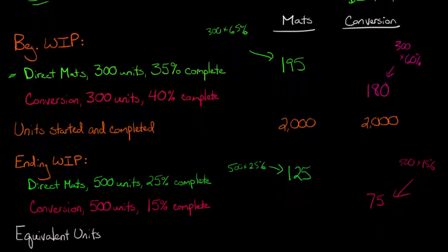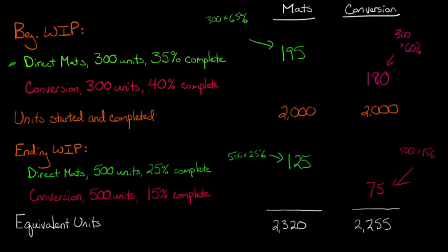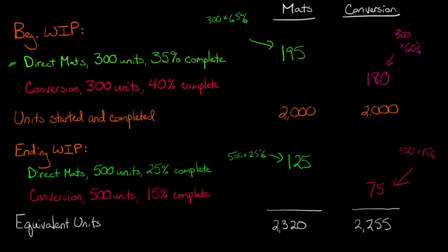Now we can calculate the total number of equivalent units — all we do is add these numbers together. For direct materials, we get 2,320. For conversion costs, we get 2,255. To get direct materials, we add the beginning WIP, units started and completed, and ending WIP figures together. Same for conversion costs, giving us 2,255 for conversion and 2,320 for direct materials.